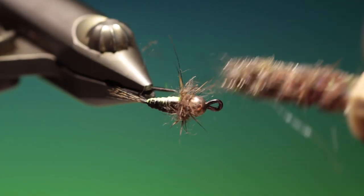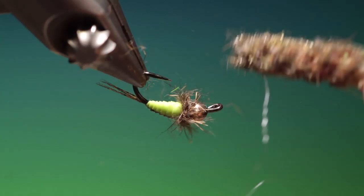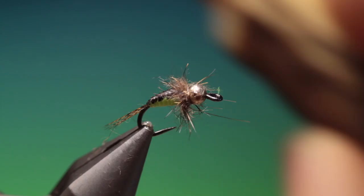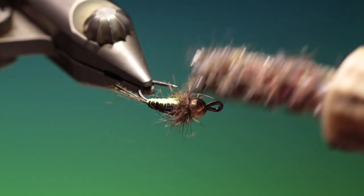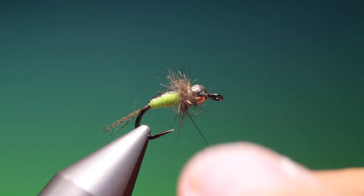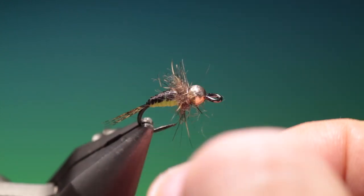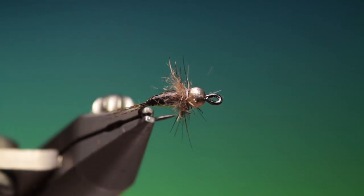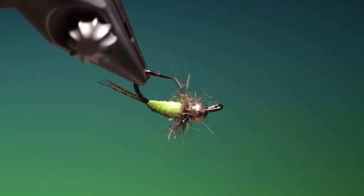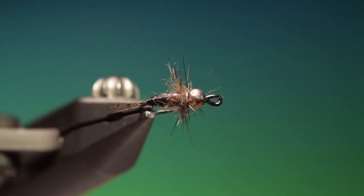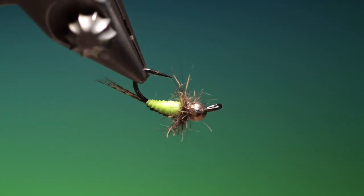And then brush out the fibres. And that's the finished Rubber grub. Great grayling pattern for this time of year. If you enjoy the videos, please like and subscribe. And thanks for watching.